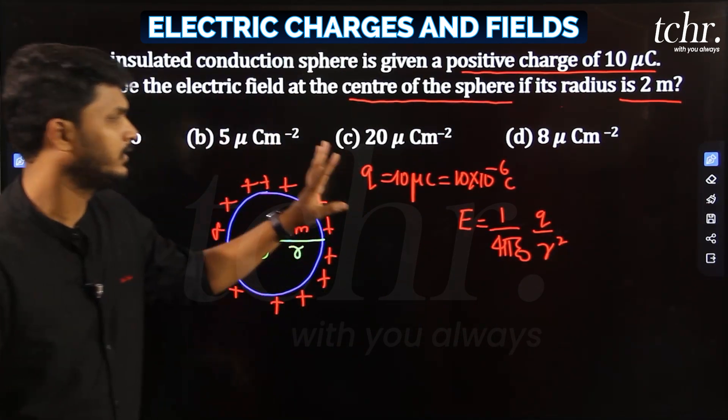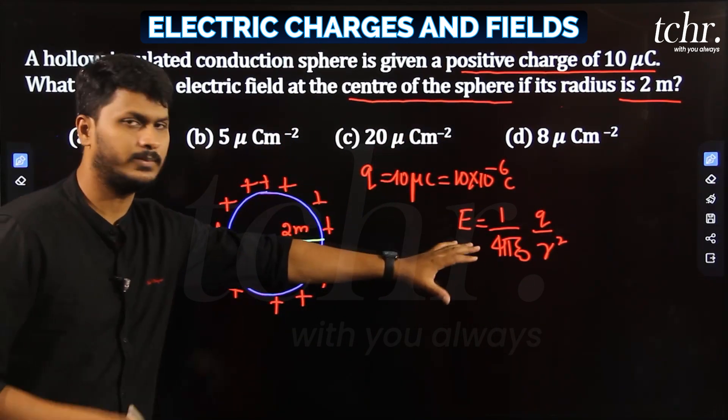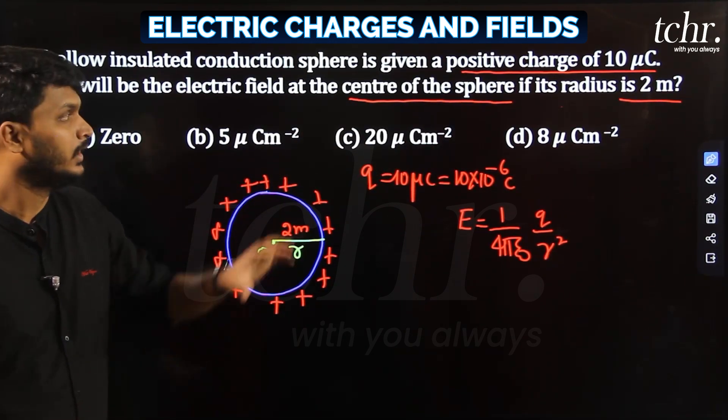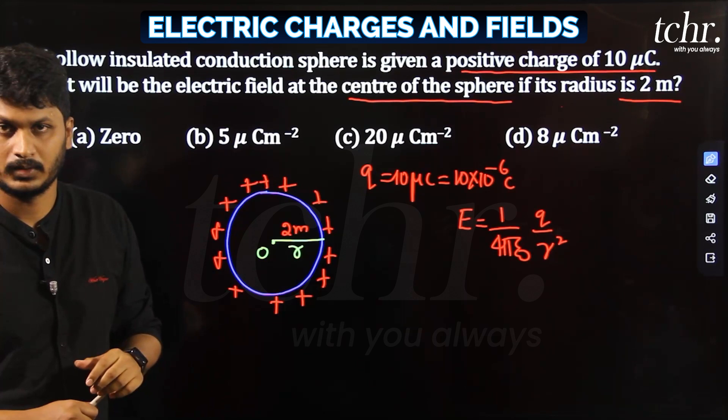If you substitute the values and simplify, you'll get an answer, but that is wrong. That is wrong. Why is it wrong? Where you find the field is also important.